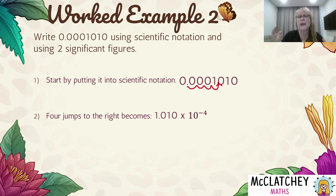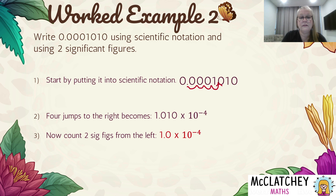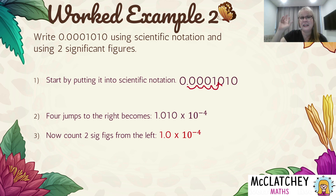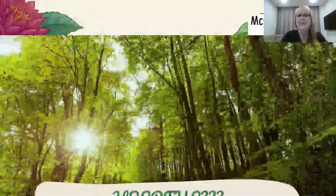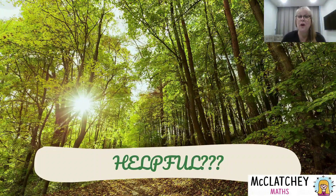Now I work out the significant figures. Counting from left to right: the first 1 is significant, and the zero between non-zeros is also significant — so two significant figures gives 1.0 times 10 to the negative 4. Everything after that gets chopped off. Those trailing zeros after the decimal point disappear, so our final answer is 1.0 times 10 to the negative 4.